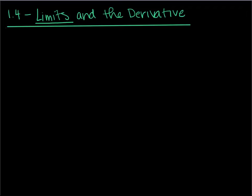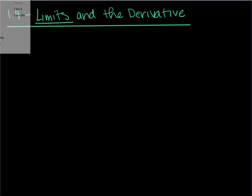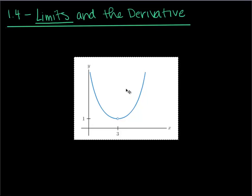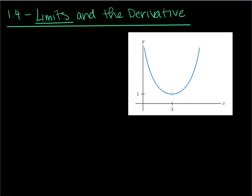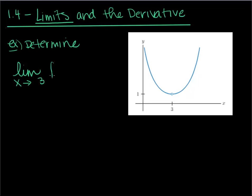I want to do a couple examples. I know you've read the book. So let's first look at a couple examples that involve looking at the graph of a function. My first example is: let's look at the graph of this function and determine the limit as x approaches 3 of f of x. This blue line is f of x, which is the same as y. So when we start looking at limits, basically what a limit is asking is: what is happening to the function values as x approaches 3?